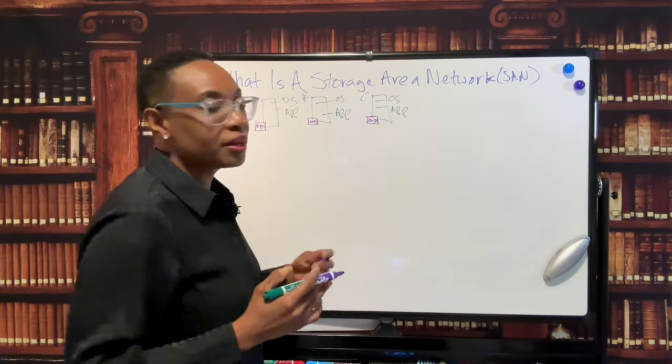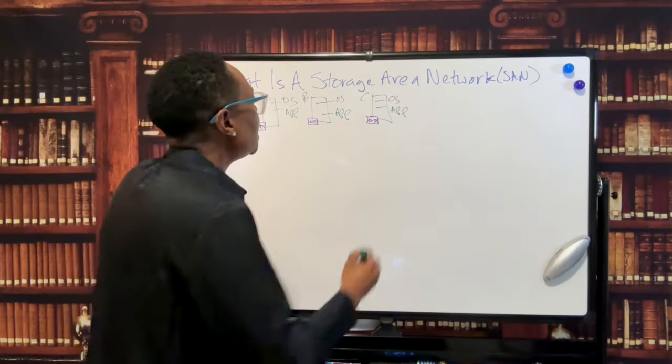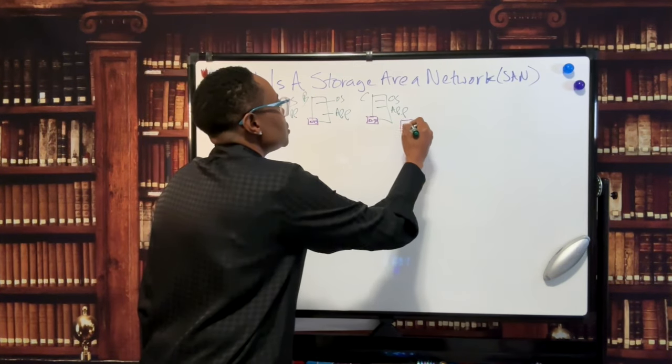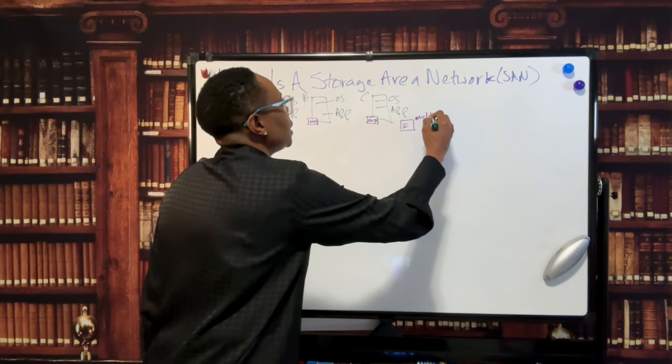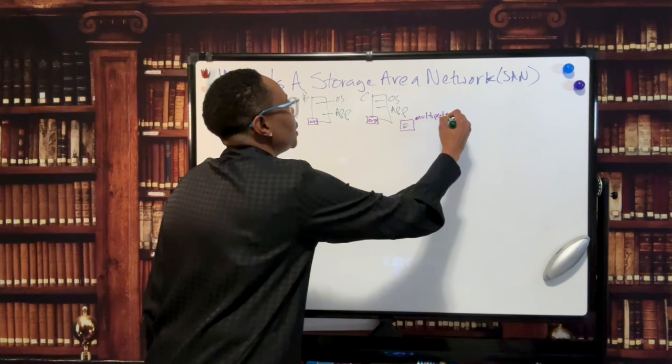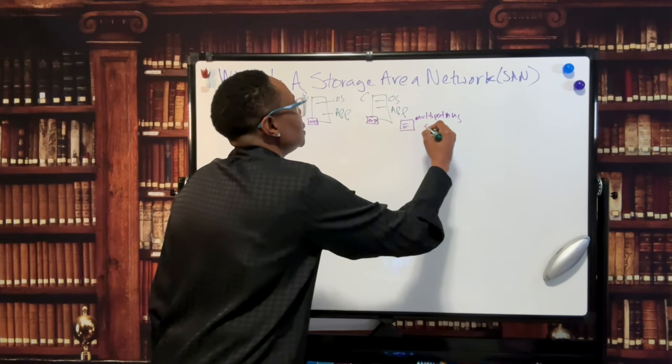So these HBA cards are generally dual-ported - you always want either two cards or you want one card with two ports. And these servers are also running multi-pathing software, and I'm going to get to this in a second.